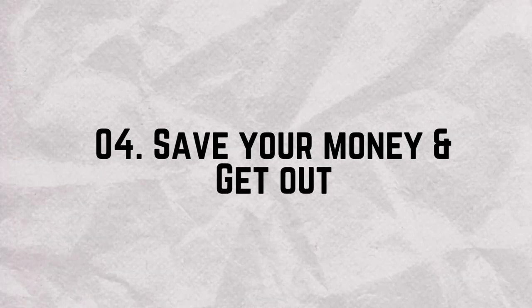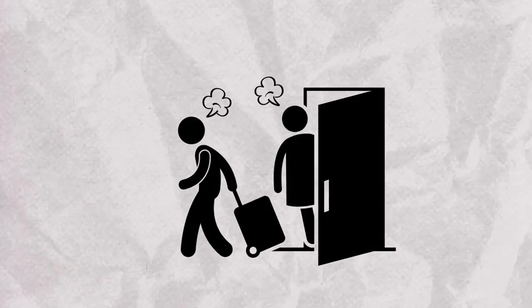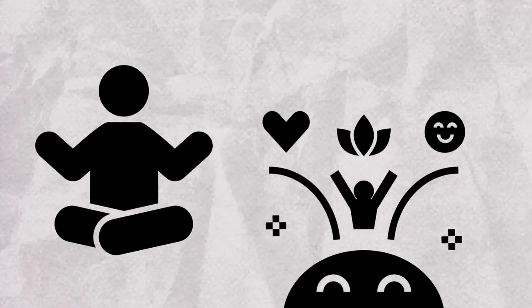Number four, save your money and get out. If you're living with toxic parents, make a plan to move out as soon as possible. Saving money and becoming financially independent is crucial. Living in a toxic environment can have long-lasting effects on your mental health, so prioritize your well-being.